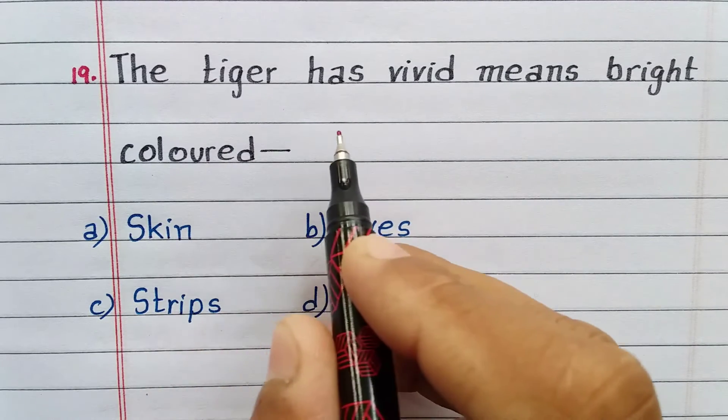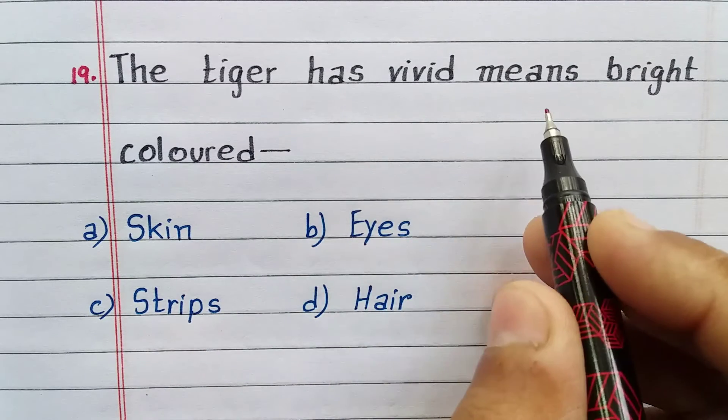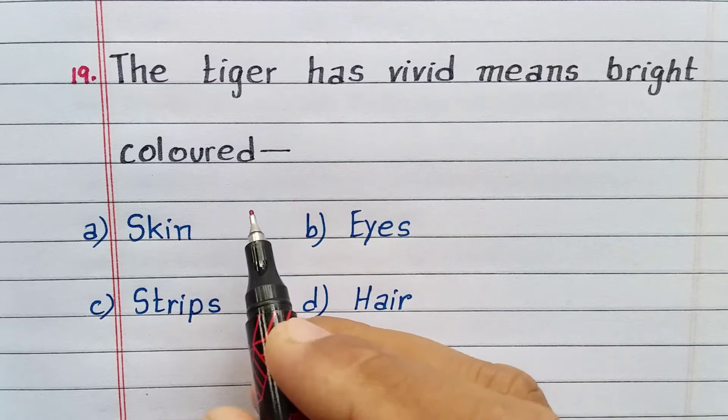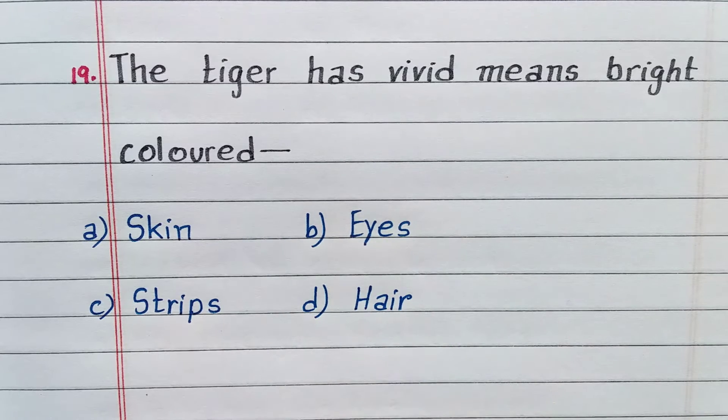The tiger has vivid stripes — 'vivid' means bright colored. Option C. Stripes.